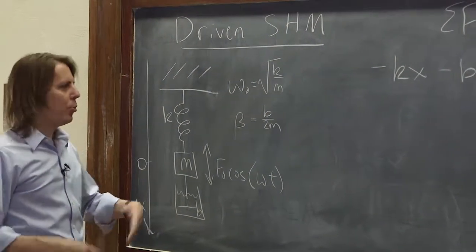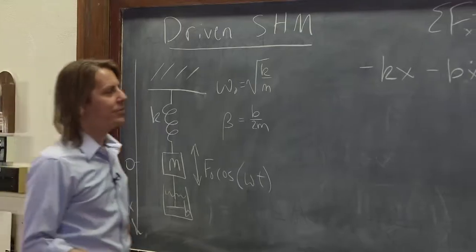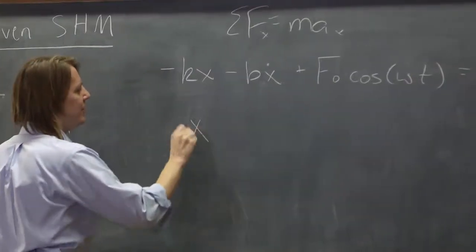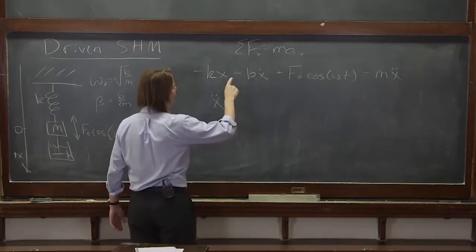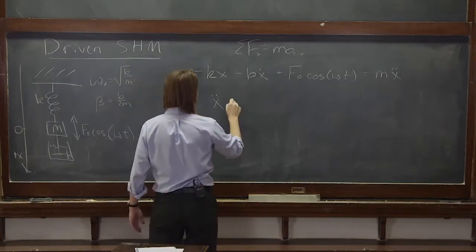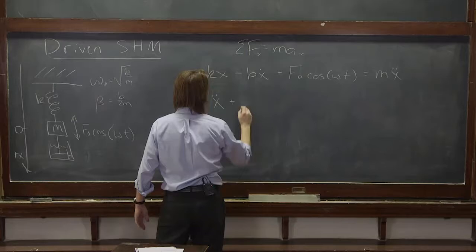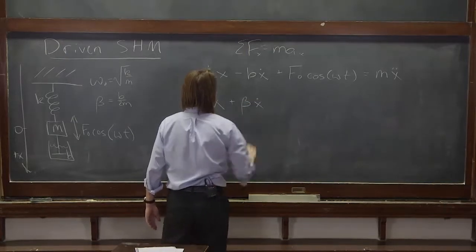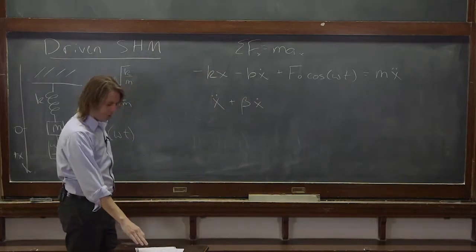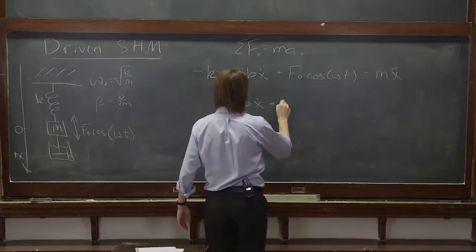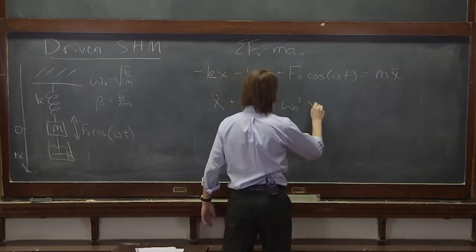We can start writing it in our more beautiful form where we get x double dot by itself. And it becomes x double dot plus beta x dot plus omega naught squared x.